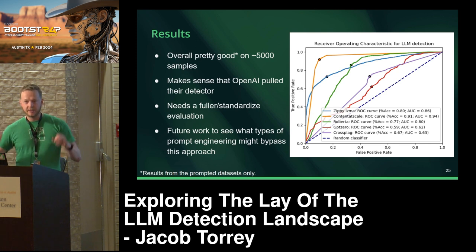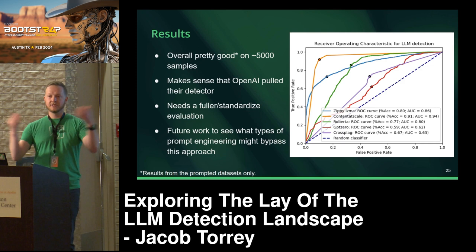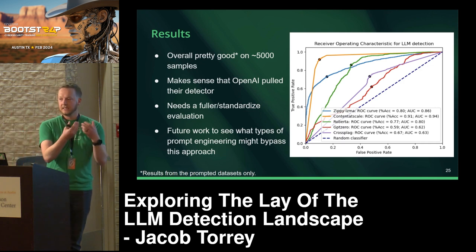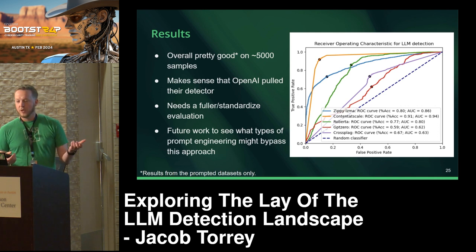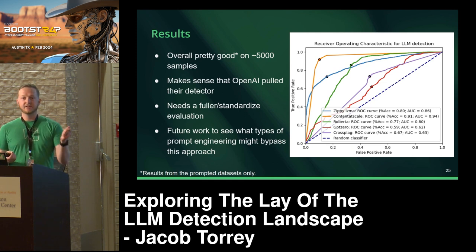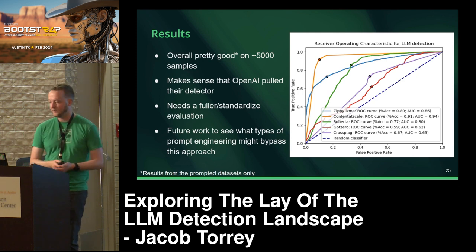There's also the big question of what types of prompt engineering may bypass detection. One early trick was 'write something in the voice of a high school student.' Because originally my LLM-generated text was just the generic voice of an LLM, asking it to write in different voices actually changed the behavior. So I went in and asked it to write in different voices. ChatGPT does a pretty good job of changing its output based on who you ask it to be. Bard would just say 'as a college student' and then give the same text with a different prefix.